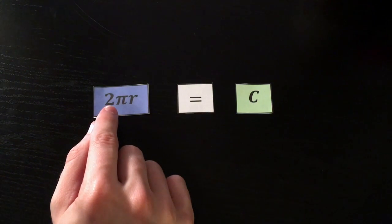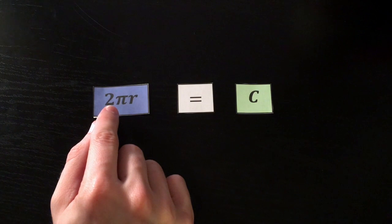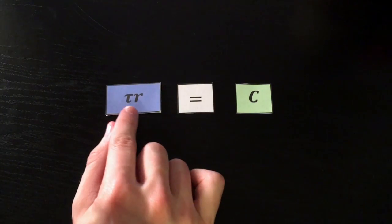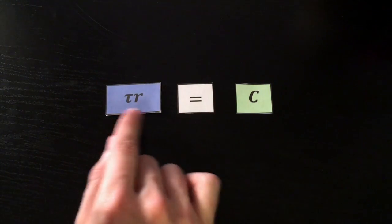Many mathematicians like to use something called tau. Tau is 2 times pi. So in that case, instead of using 2πr, we can just use tau times r. So the circumference is just τr.